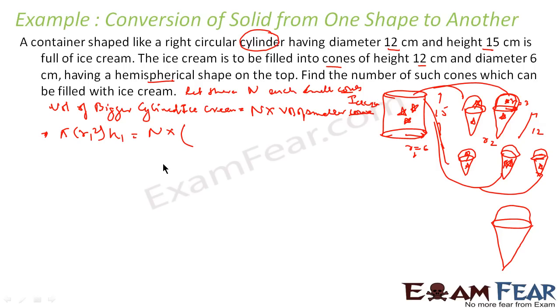So this is nothing but 1 by 3 pi r2 square h, the volume of cone, plus volume of hemisphere, 2 by 3 pi r2 cubed. So this will be the volume of the smaller ice cream. This question we have done so many times where we have cone and hemisphere. So I am doing it a little faster. If you don't understand this, please watch previous examples.